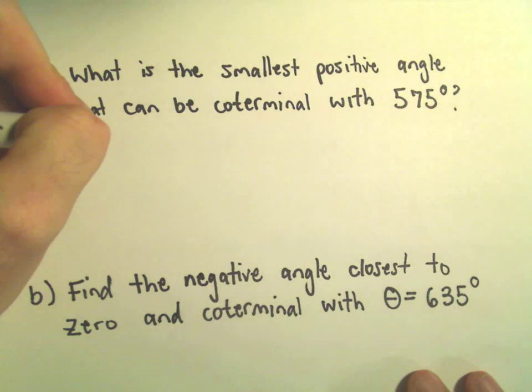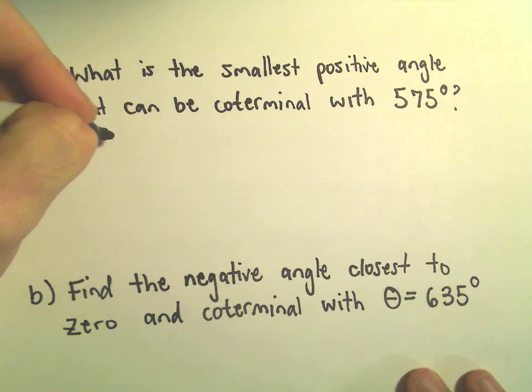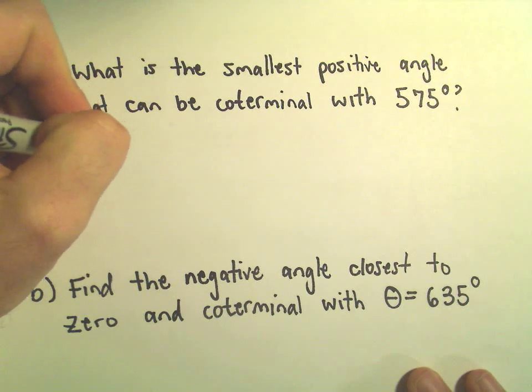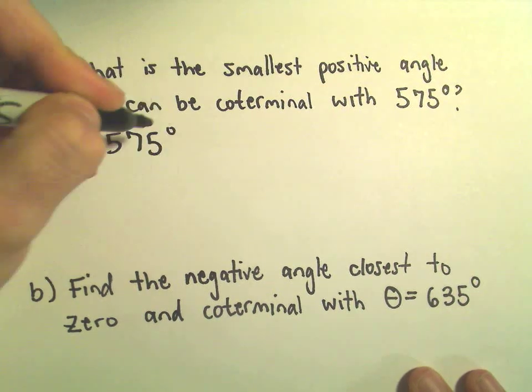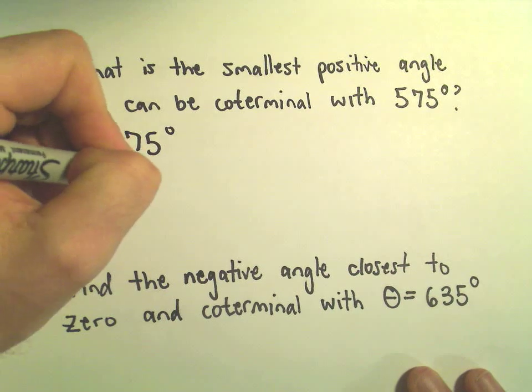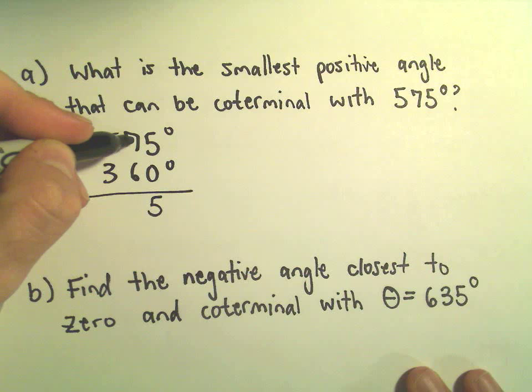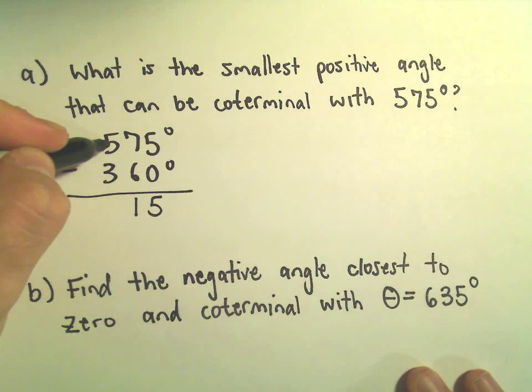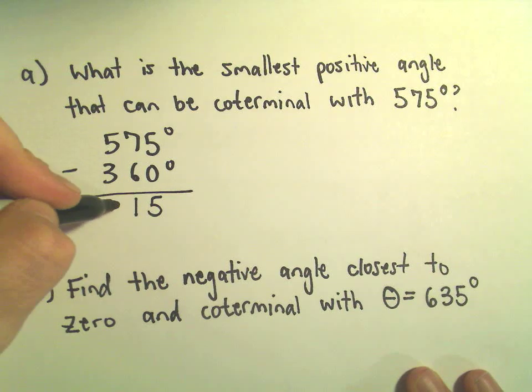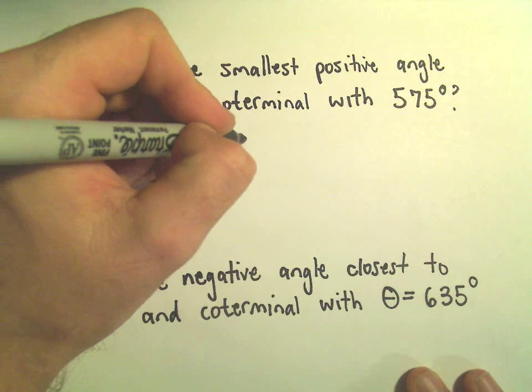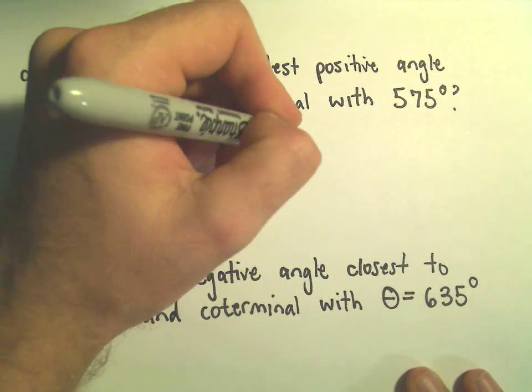So since they have to be, basically the difference between them has to be a multiple of 360, all I'm going to do is simply subtract 360 degrees. So if we subtract 5 minus 0 is 5, 7 minus 6 is 1, 5 minus 3 is going to be 2. So 215 degrees is coterminal.